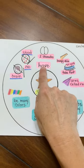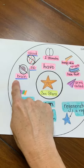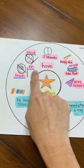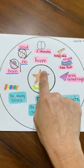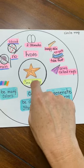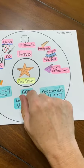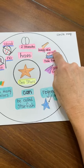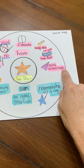Sea stars have no brain. Sea stars have no blood. Sea stars have bumpy skin, tube feet, an eye spot, and arms called rays.